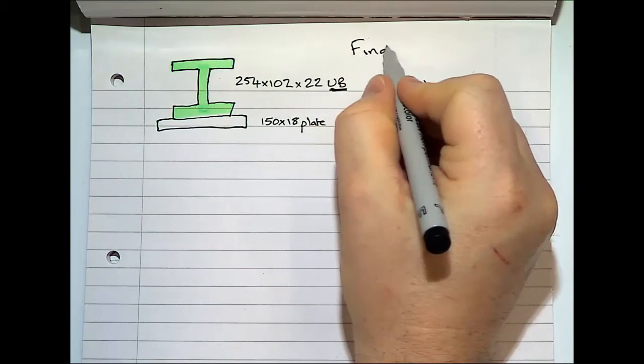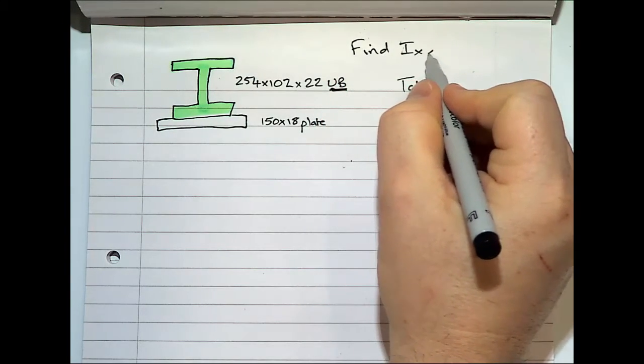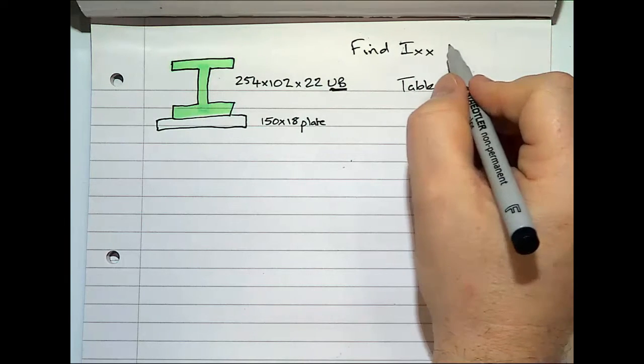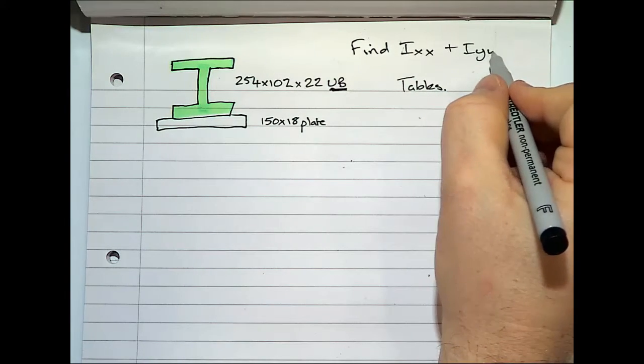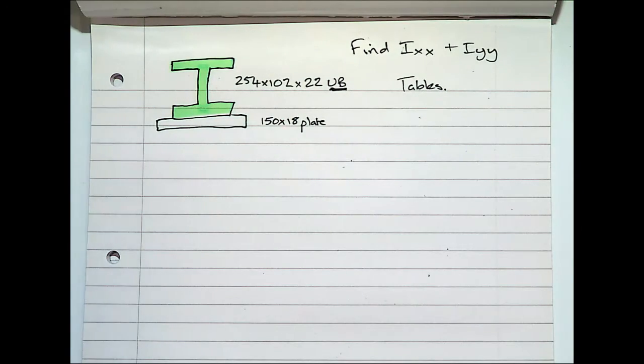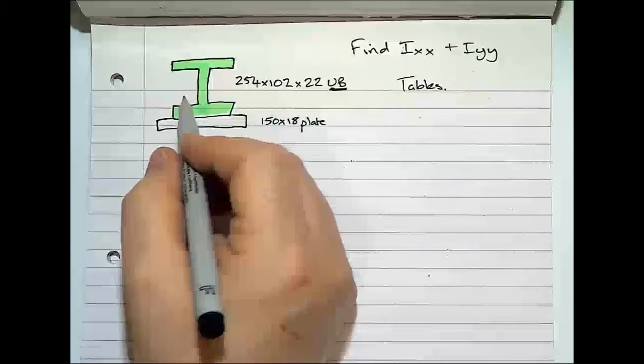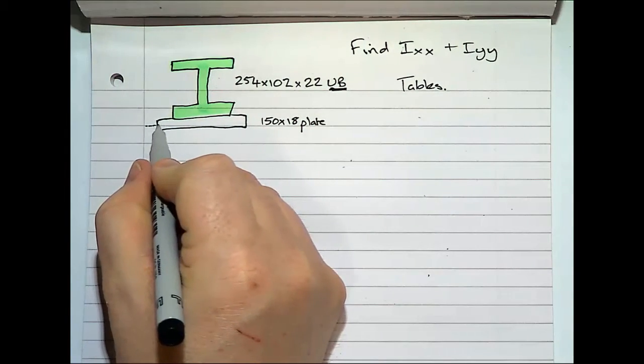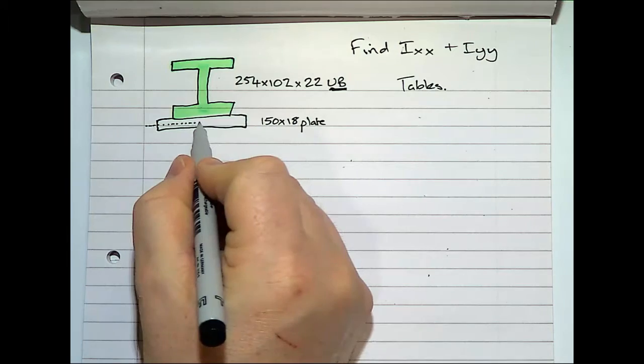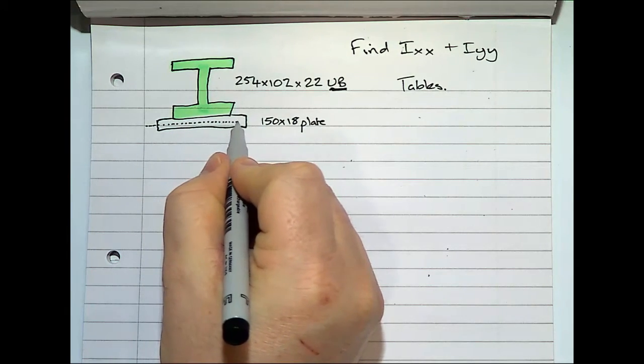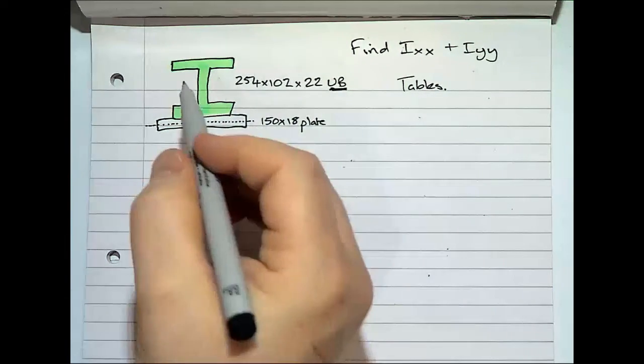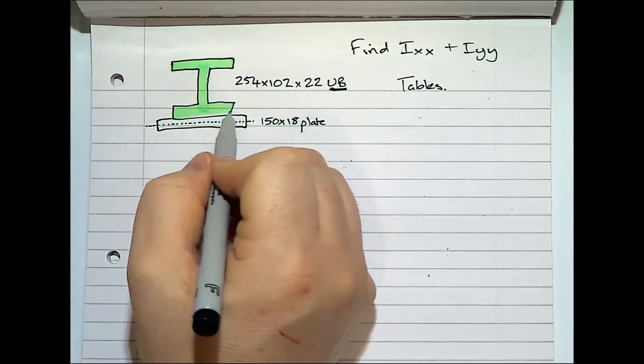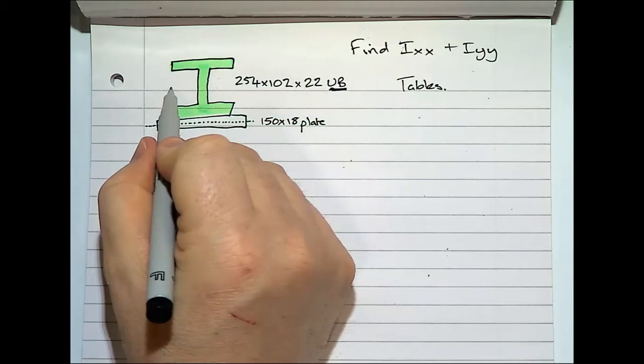Find Ixx and Iyy. This plate has its own neutral axis through the middle. It's a rectangle and this I-beam also has its own neutral axis.